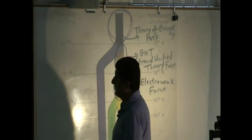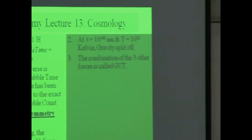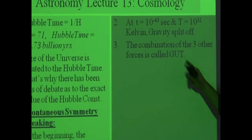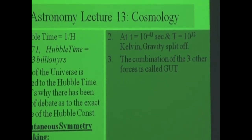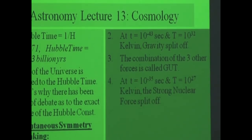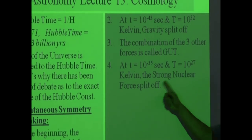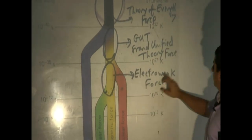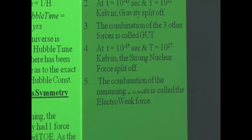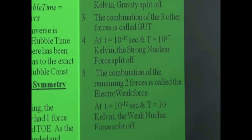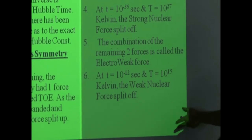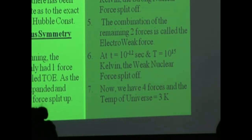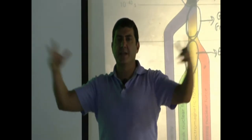It says at T = 10 to the minus 43 seconds and temperature 10 to the 32 Kelvin, gravity splits off. The combination of the other three forces is called GUT — grand unified theory force. At 10 to the minus 35 seconds and temperature 10 to the 27 Kelvin, the strong nuclear force splits off. The combination of the remaining forces is called electroweak. And at 10 to the minus 12 seconds and temperature 10 to the 15 Kelvin, the weak nuclear force splits off. Now we have four forces, and after that, no other forces split off.